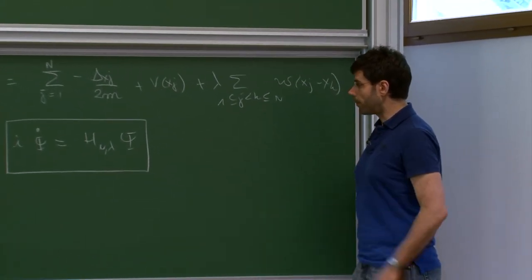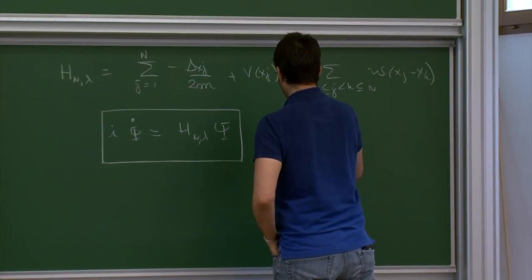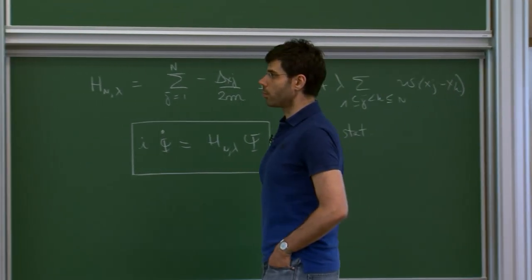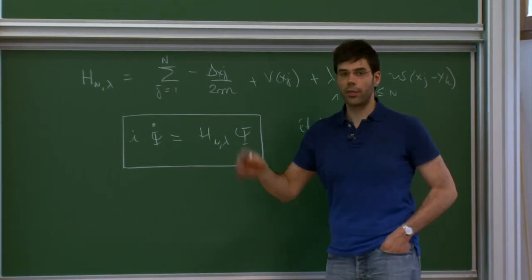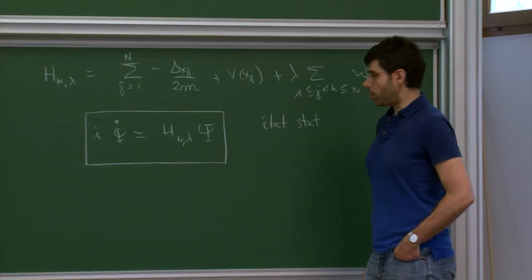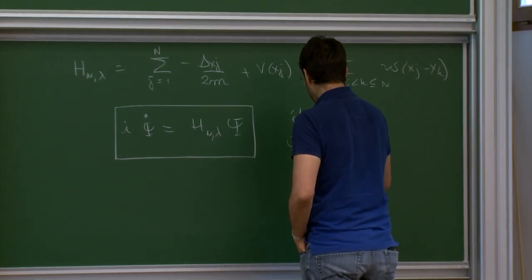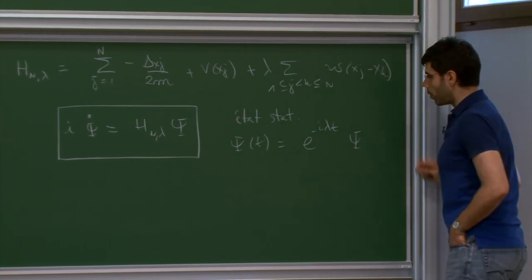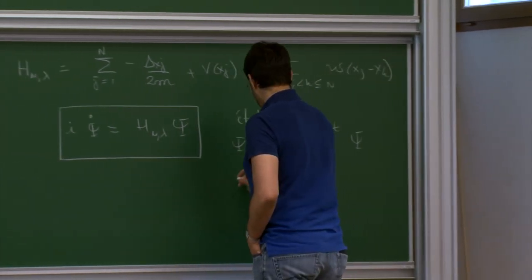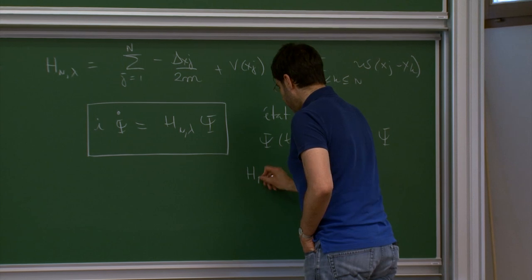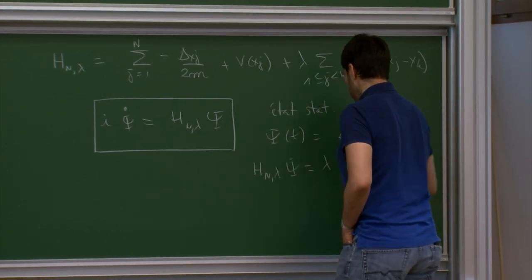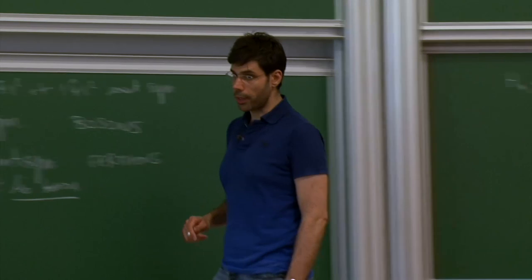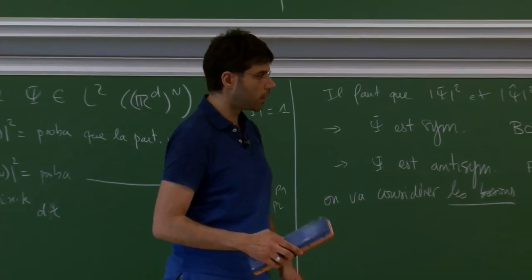Now, for stationary states: here we identify functions that are equal up to a phase. So we allow a phase that can depend on time. Thus ψ(t) of the form e^{−iEt} ψ, where ψ does not depend on time, will be a stationary state. In that case, the ψ in question will be an eigenfunction of the operator H_N. Remember that ψ is always assumed to be normalized in L².